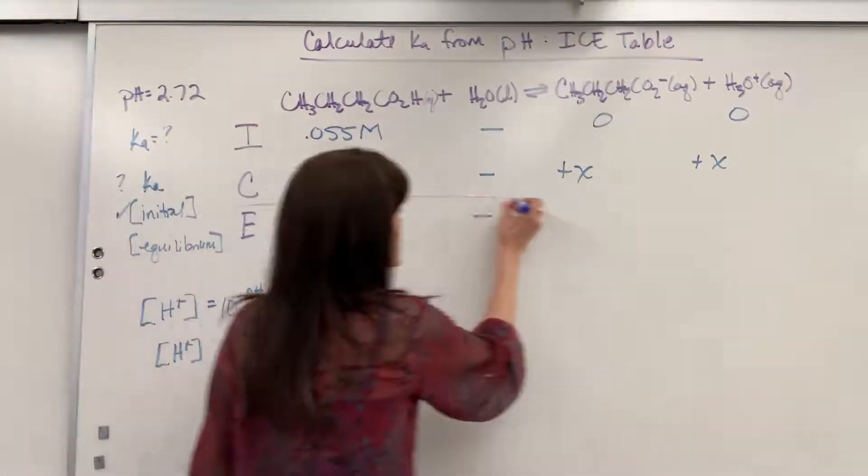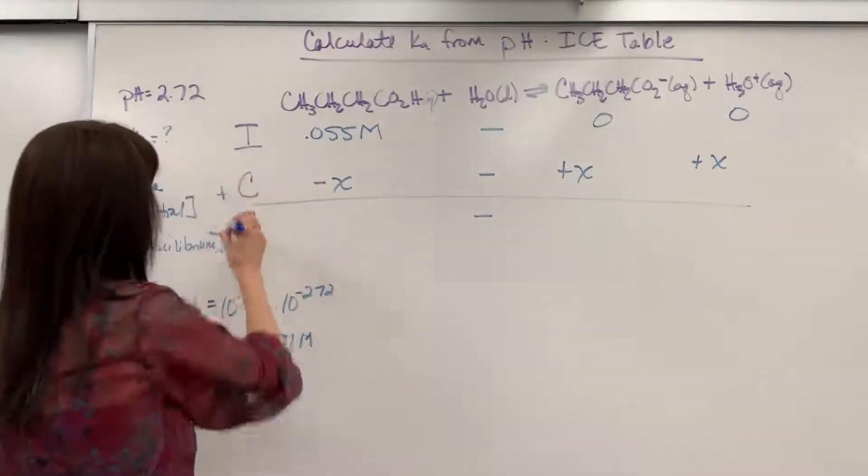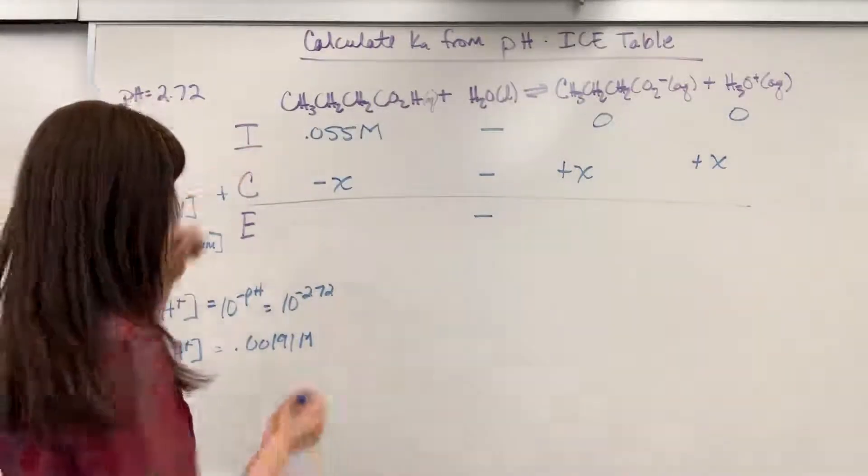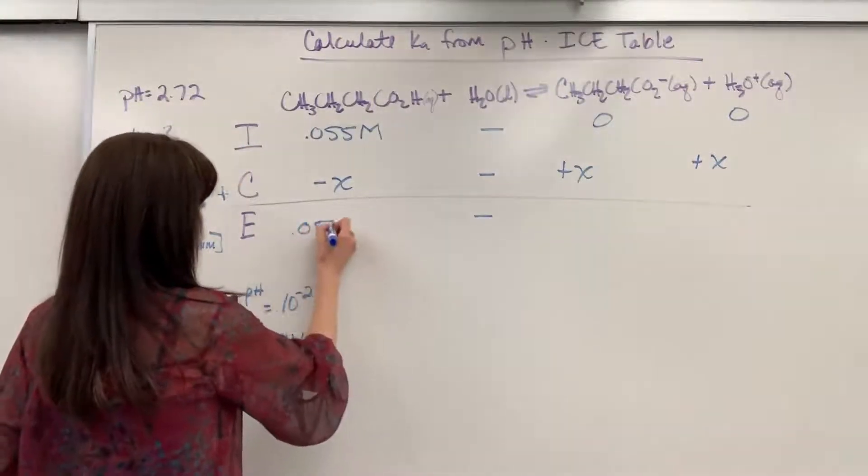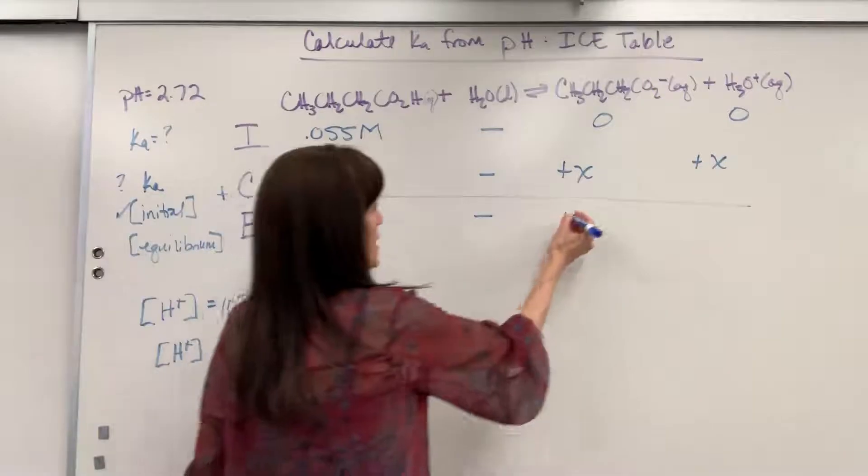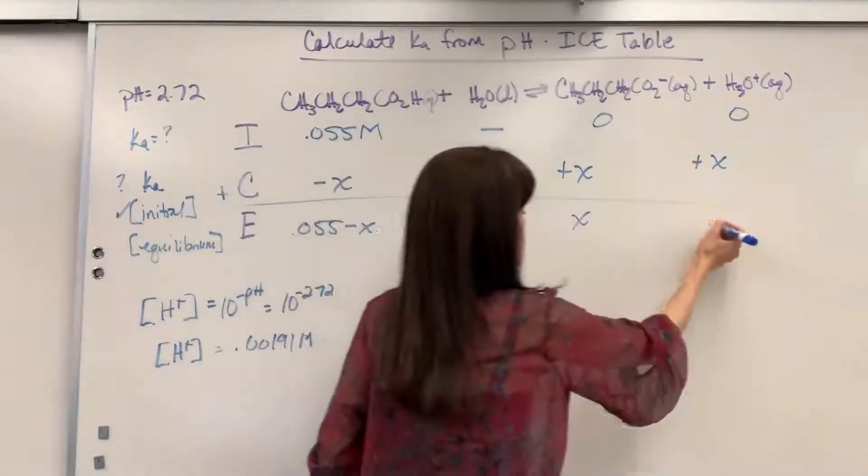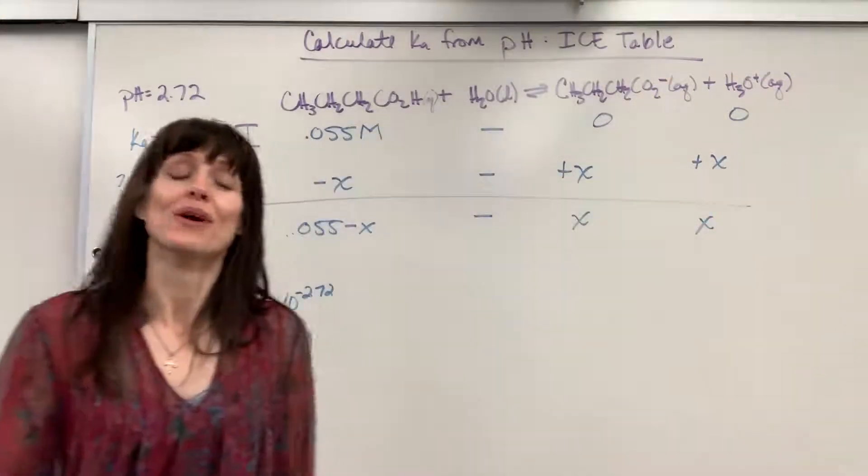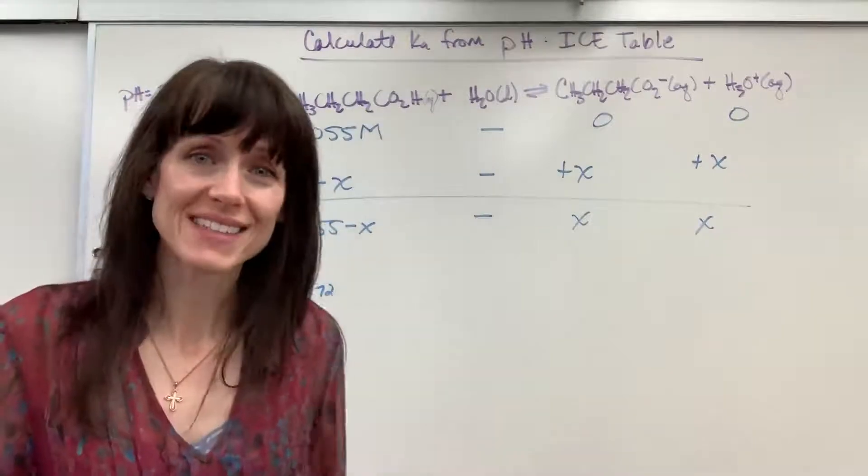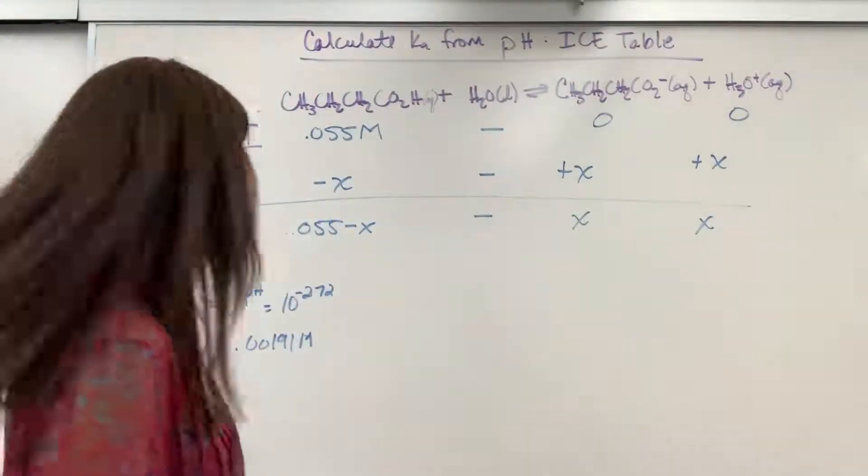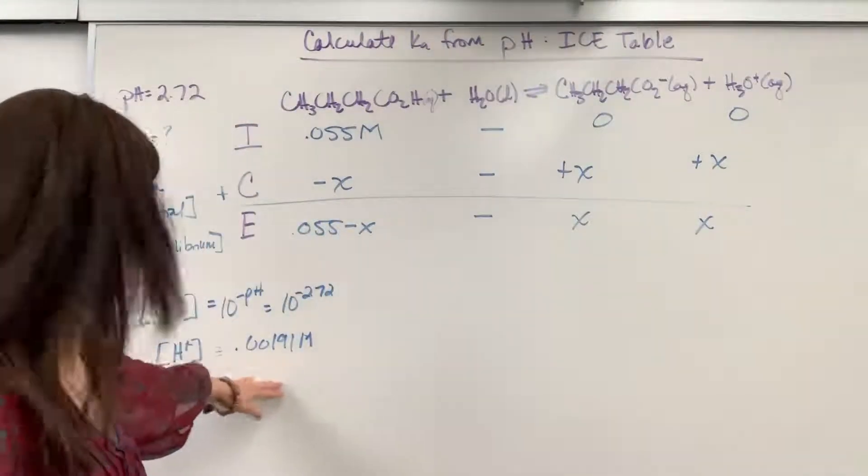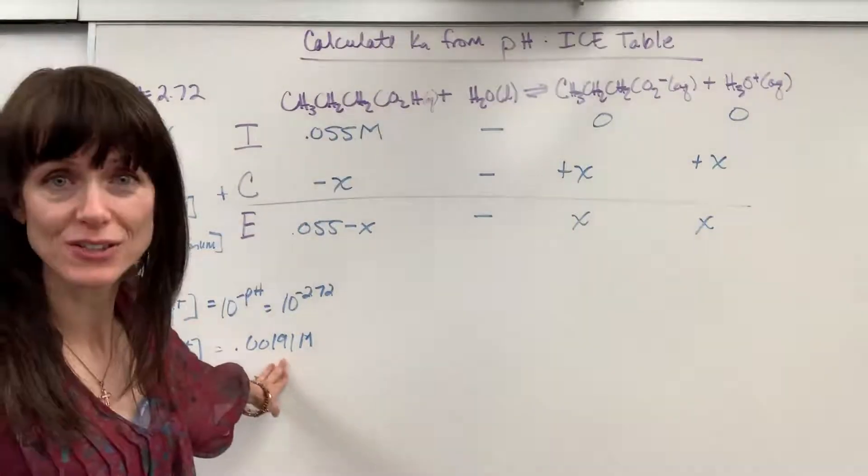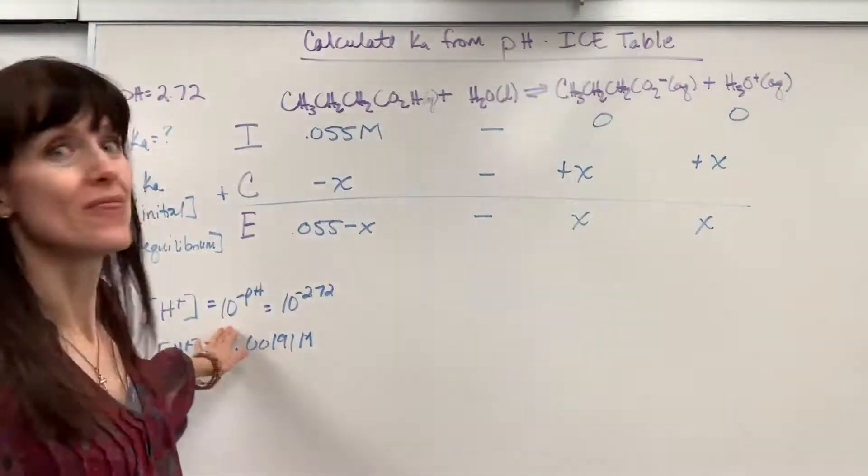E is super easy. All we have to do is I plus C. So we're going to have 0.055 minus X. Zero plus X is X. Zero plus X is X. Well, the beauty of pH, guess what? We have X. X is right there. It's the concentration of the hydrogen ion. We got that from the pH. So cool.